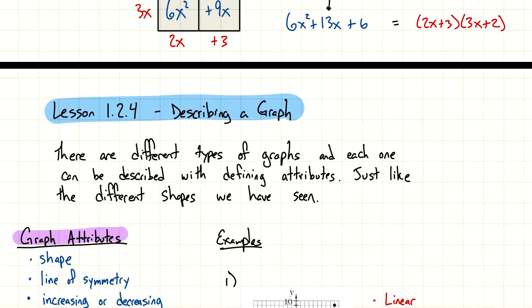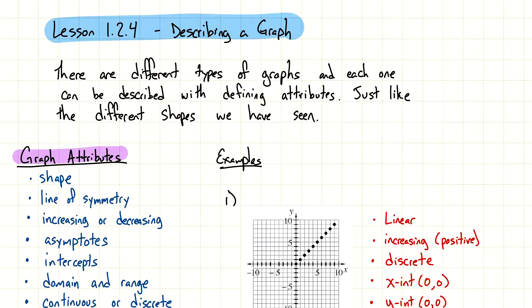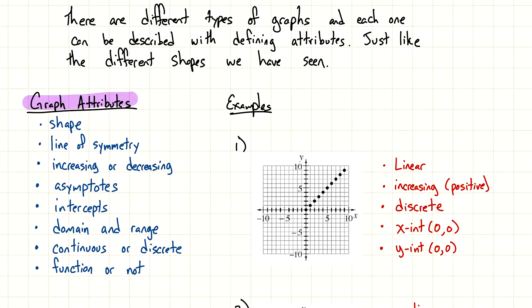And then the last lesson, it's a little bit shorter. And it's also something you technically have already seen before. And that is describing a graph. There are different types of graphs. And each one can be described with defining attributes. Just like the different shapes we have seen. Just recently we talked about shapes. What defines, like how do we know it's a square? What defines it to be a square? And then the square, we said it has four equal sides and four equal angles. Those are defining attributes.